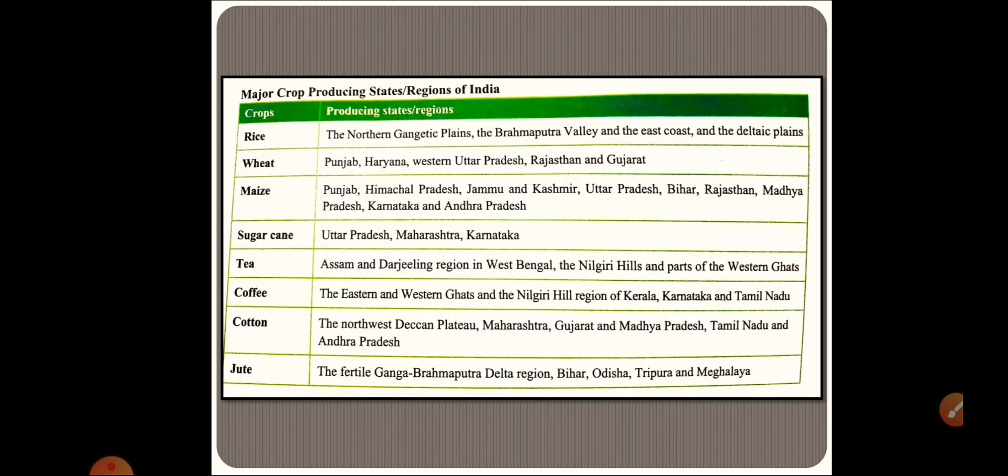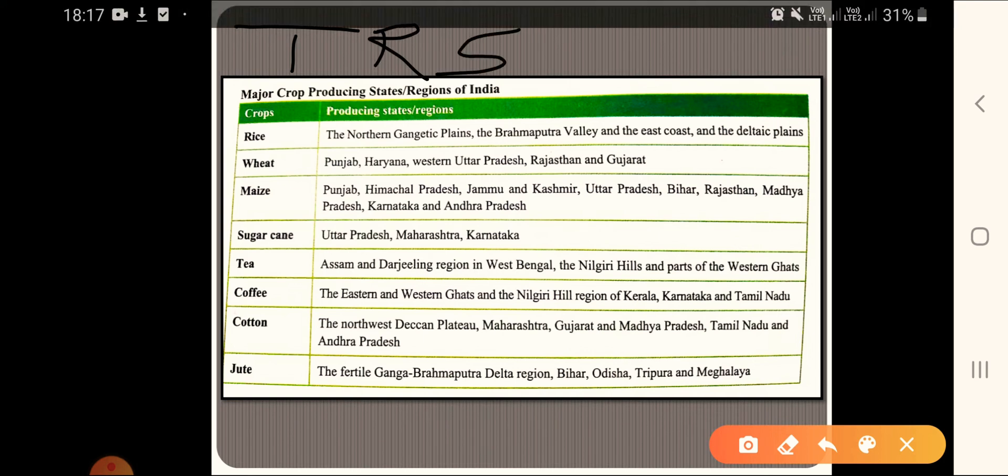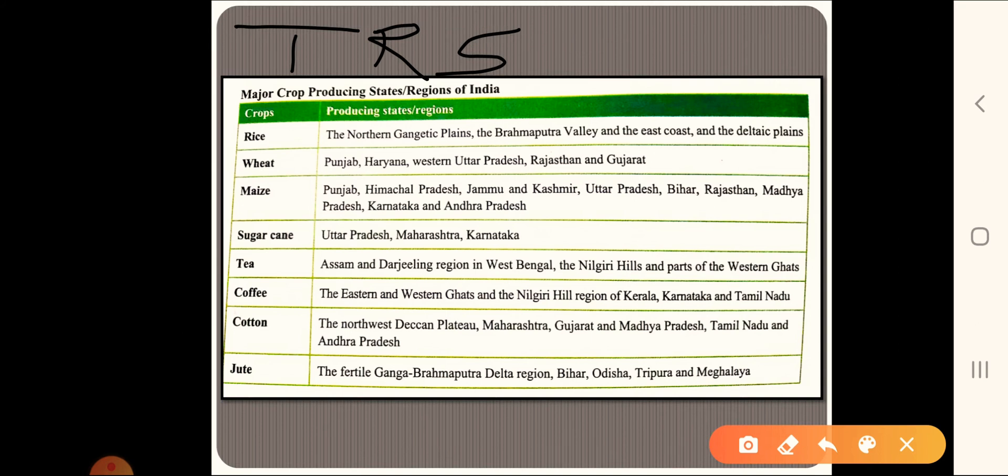Moving towards the major crop producing states and regions of India. If you remember, you can write these as your fourth point. By now you are doing the three points that is temperature, then you have to write about rainfall, and then you have to write about the soil. And now the fourth point which you can include is the crop producing states. So you need to remember the states as well.